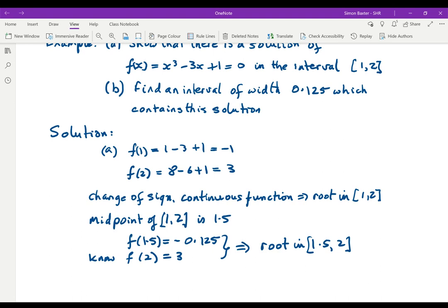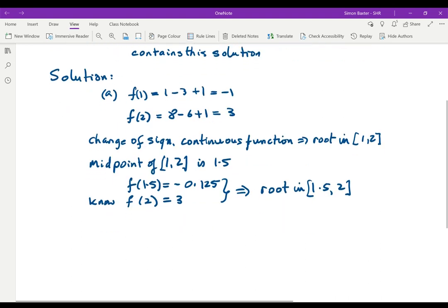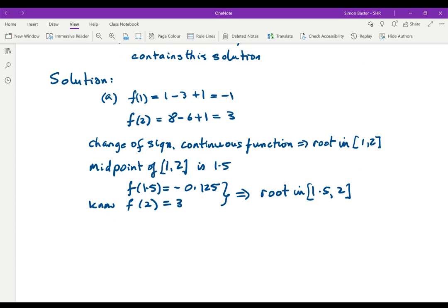Interval bisection again means we want to take the midpoint again. The midpoint of [1.5,2] is 1.75. So we look at f of 1.75. f of 1.75 is 1.109 with a few more figures.